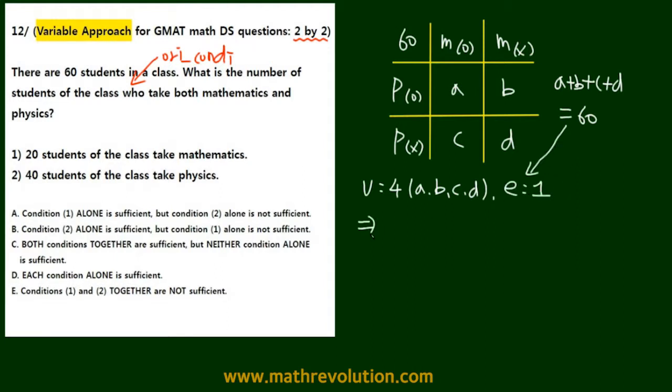That means that we need 3 more equations to solve for the 4 variables, since we need the number of equations to match the number of variables. Usually condition 1 and 2 each only gives us one equation. This makes it likely that E is going to be our answer. Actually E is going to be the answer, so we will check that by looking at conditions 1 and 2 together.